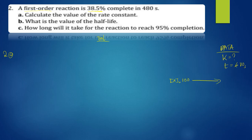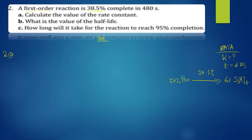38.5 percent has been used or consumed. So we subtract 38.5 from 100, and we get 61.5. That will be our final concentration. So we have an initial concentration of 100 and a final concentration of 61.5. Now we need to write the integrated rate equation for the first-order reaction.